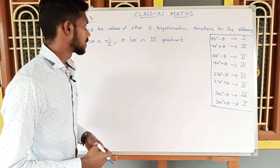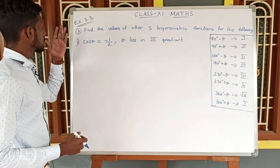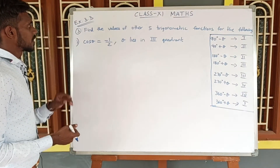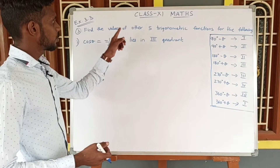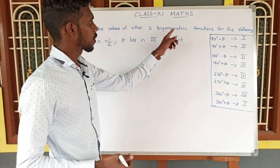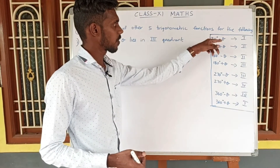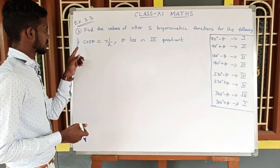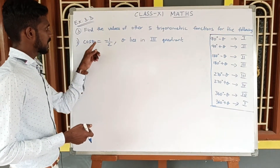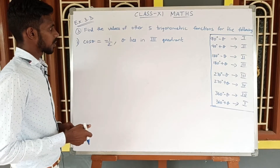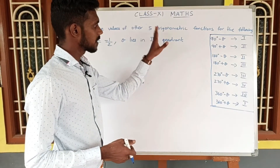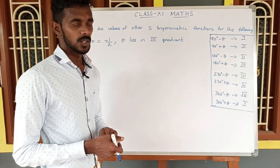Students, let us see the third question in exercise number 3.3: find the values of 5 trigonometric functions for the following. First sub-question: cos θ is equal to minus 1 by 2, where θ lies in the third quadrant.